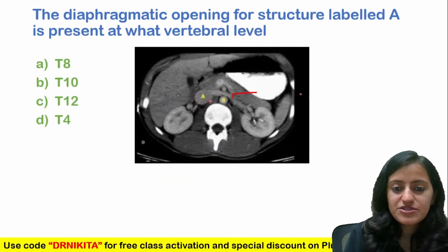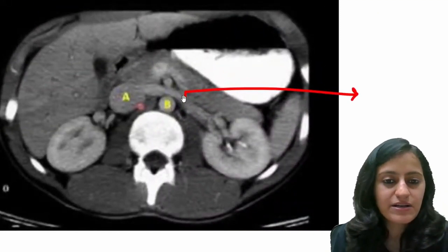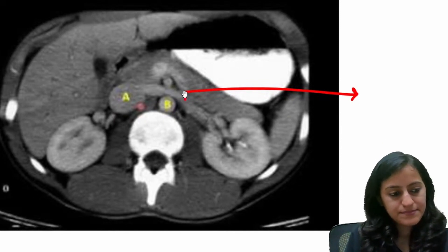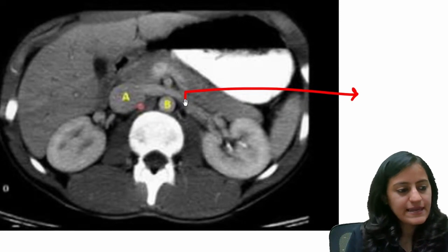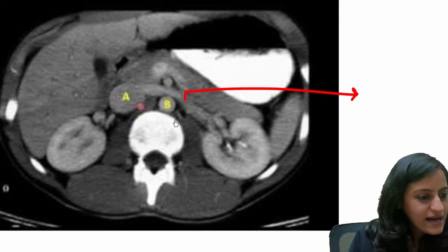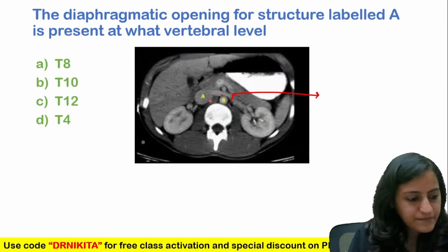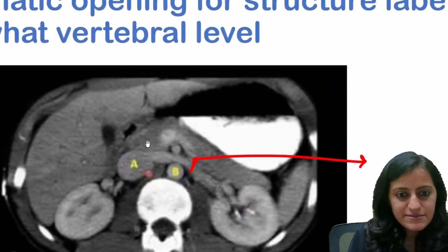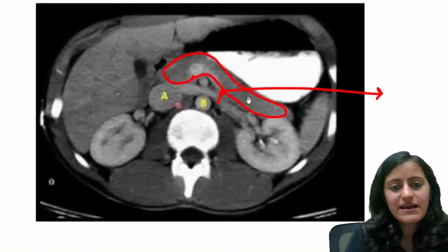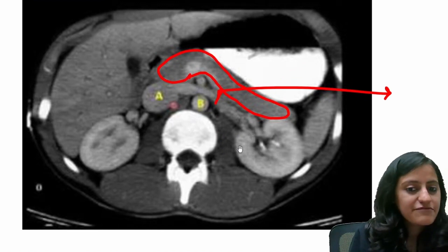Now, identify this structure on the CT scan. Let me zoom in this image for you — what is this structure here? This is the left renal vein. This is the left kidney, and coming from there is the left renal vein going into the IVC.